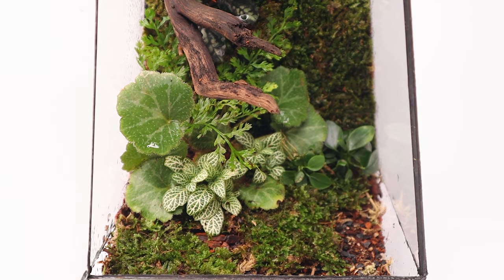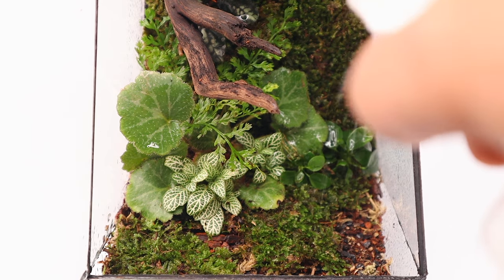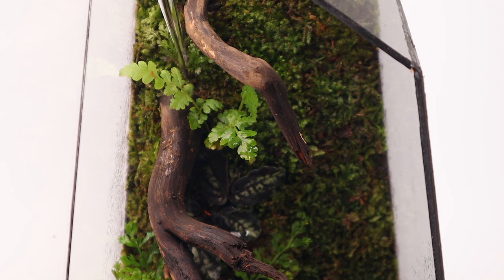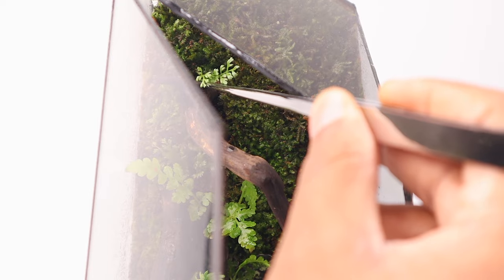These are aquatic epiphytic plants and do very well in closed terrariums. I plant a mini bolbitis behind it and proceed to add a few tinier ones on the moss wall along the driftwood.